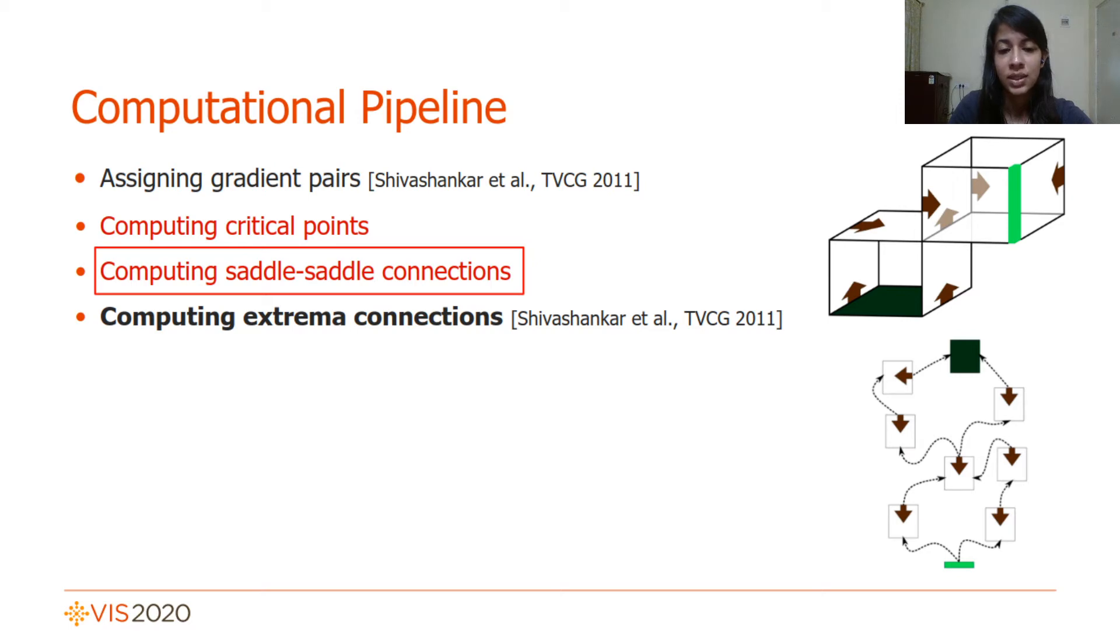Note that we extensively leverage data parallel primitives such as prefix sum and stream compaction offered by the library Thrust, details regarding which are available in the paper.